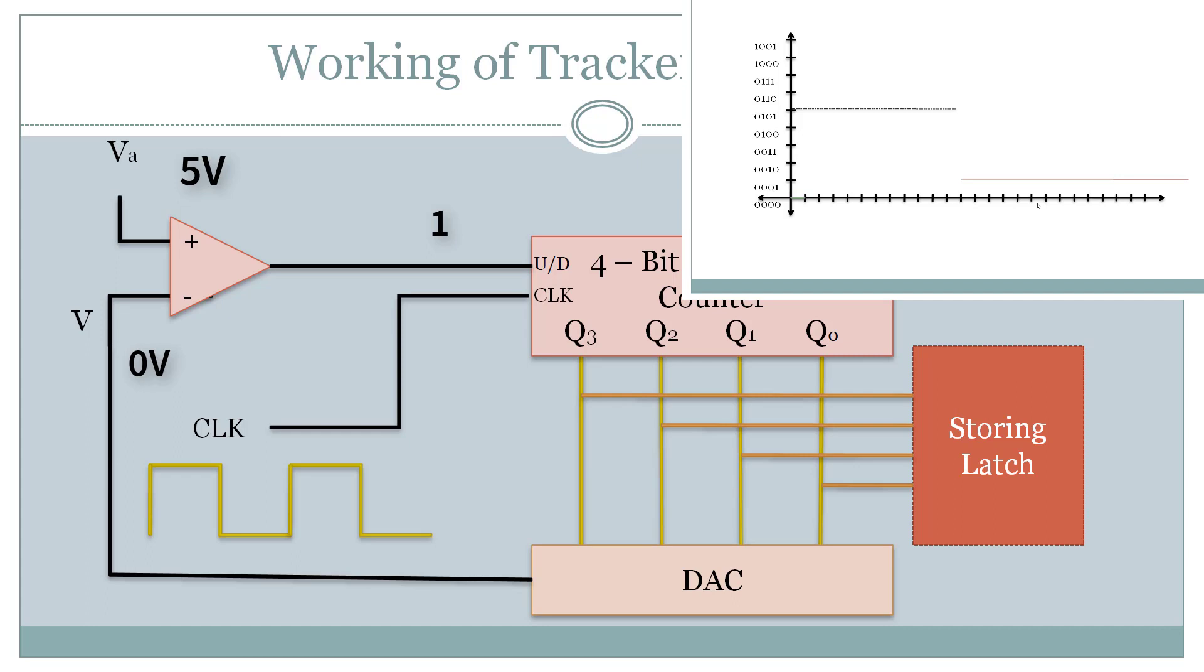The logical one output from the op-amp tells the counter to count up by 1 unit. As the counter changes, the output of DAC also changes. Now it equals to 1 volt. Again, 5 volt is greater than 1, the op-amp gives a logical one output and count increases by 1. This continues till the output of DAC is 5 volts.